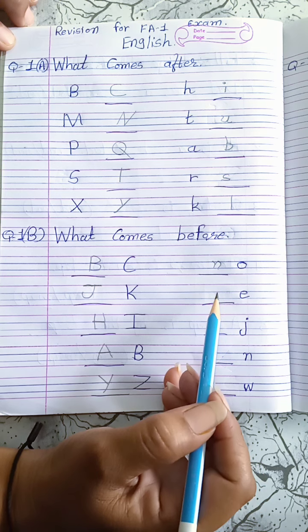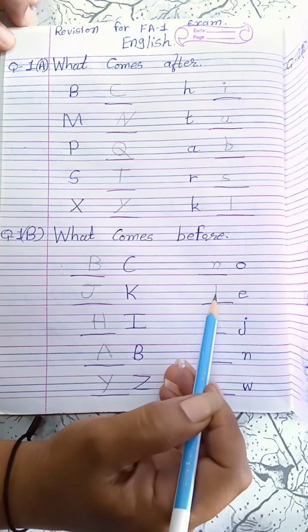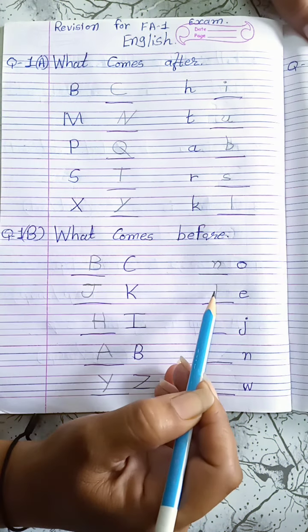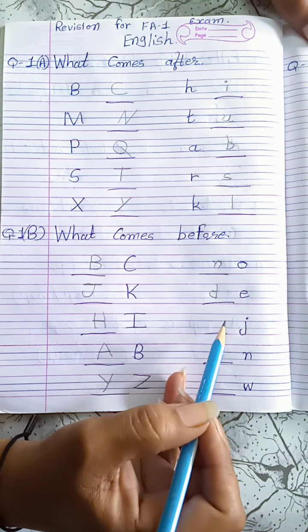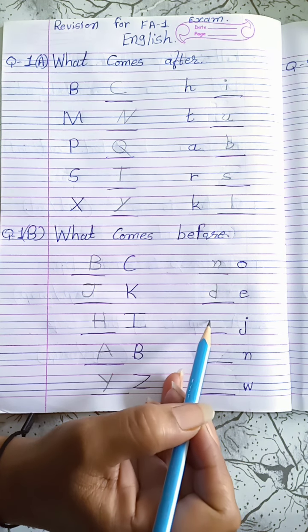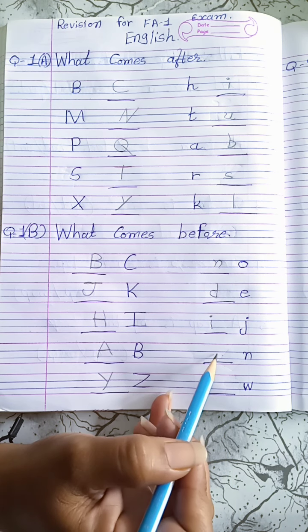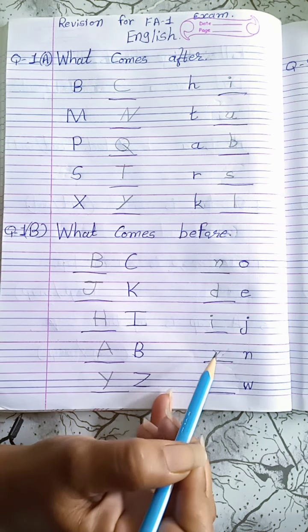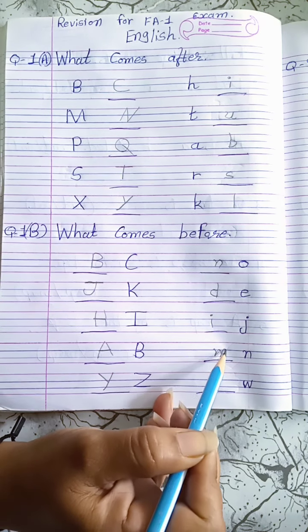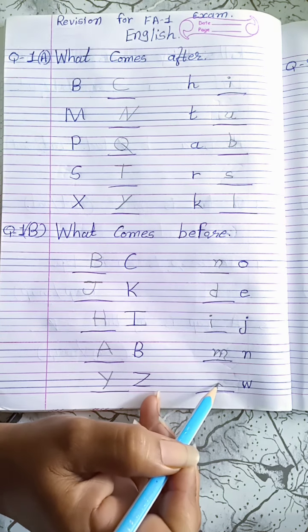What comes before E? D. What comes before J? I. What comes before N? M. What comes before W? V.